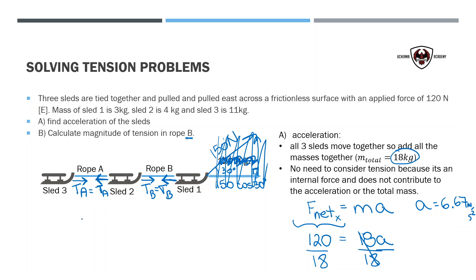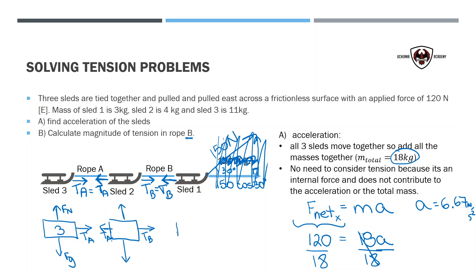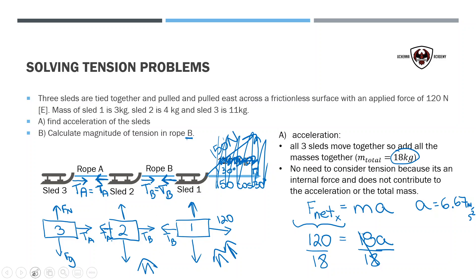Tension in each rope is the exact same. If I draw the free body diagram of sled 3, I've got gravity, the normal force, and the applied tension — that's tension in rope A. For sled 2, I've got tension in rope A and also tension in rope B, plus normal and gravitational forces. Then sled 1 has 120 newtons going to the right, tension in rope B going to the left, and normal and gravitational forces. If I'm asked for tension in rope B using sled 2, I also have tension A which I haven't figured out yet.